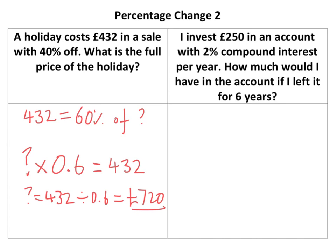The second one is something called compound interest. Per year — they might say per annum, that means per year. What you'd do if you were doing it for one year: you'd do 250 multiplied — now an increase of 2% is a multiplier of 1.02, not 1.2, that's 20%. So 1.02.